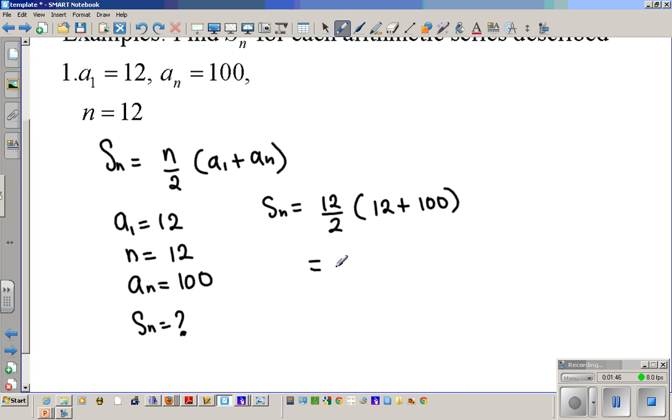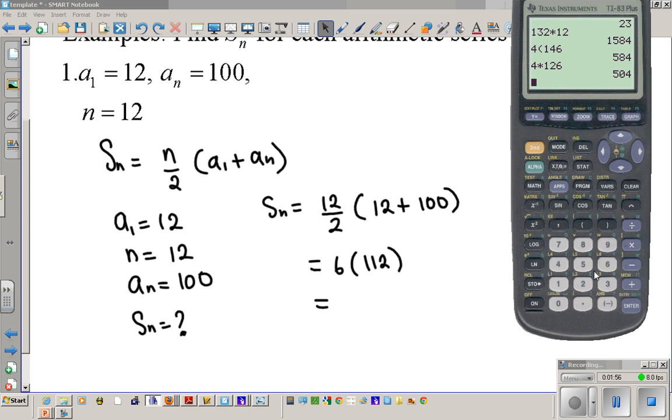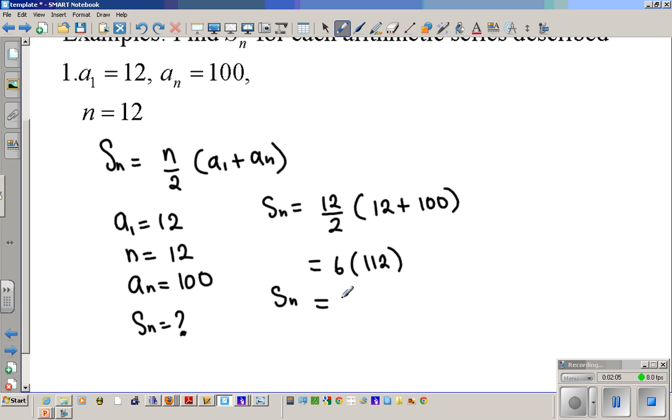So that's going to give us, 12 over 2 is 6, 6 times 112. And then you multiply that out, you can use your calculator to do it. So let's go. And your answer is 672. So the sum of the sequence of the series is 672.